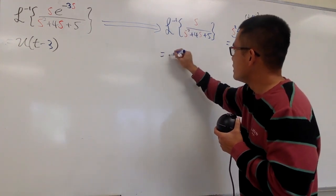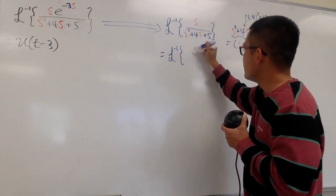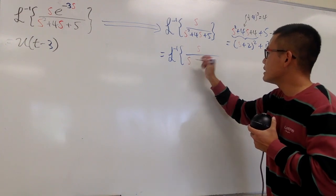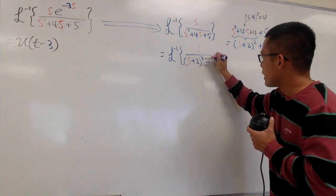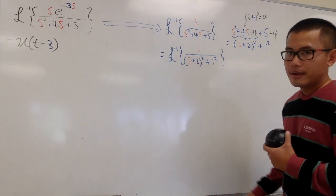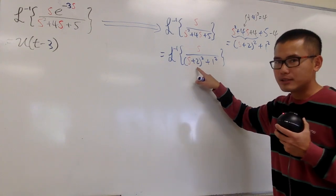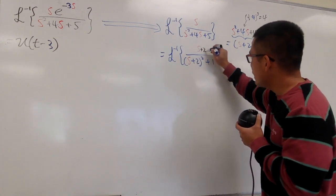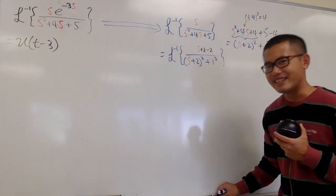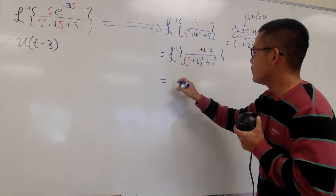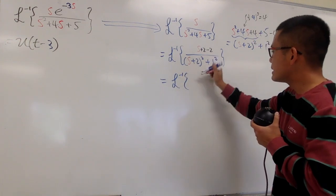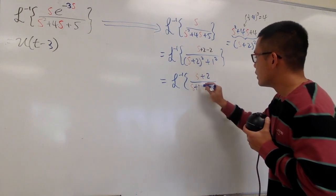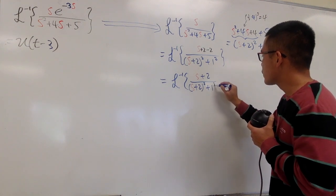Now the inverse Laplace has s on top over s plus 2 squared plus 1 squared. We need s plus 2 on top, so add plus 2 and subtract 2 immediately so nothing changes. We can break this into two parts: the first is s plus 2 over s plus 2 squared plus 1 squared, and the second has negative 2 as a constant multiple out front.